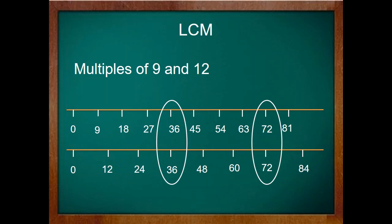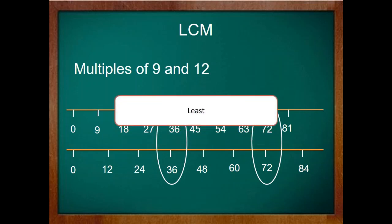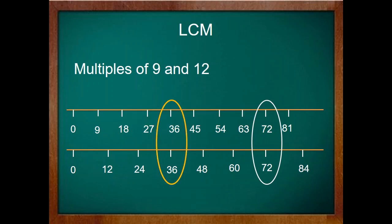Now let's pick the third term which is the least. So the least number out of 36 and 72 is 36. So the least common multiple of 9 and 12 is 36. Okay, this was only to understand the meaning of LCM that is least common multiple.